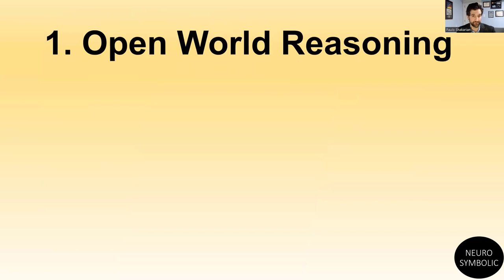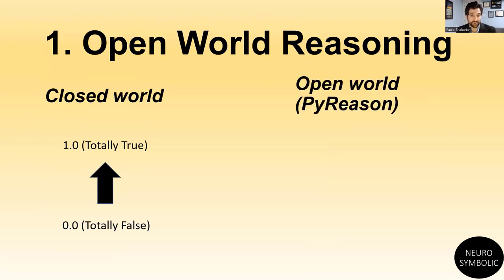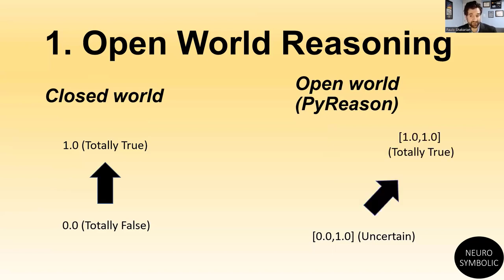The first major capability is open-world reasoning. With a typical real-valued logic, you have a closed-world assumption, which means all your logical statements start out at [0, 0], which is totally false, and as inference proceeds they become more and more true. An open-world assumption, which is what we support in PyReason, means everything instead starts with the interval [0, 1], meaning there is no information — you're uncertain, as opposed to being false. Things still increase in a monotonic fashion, either becoming totally true or totally false.